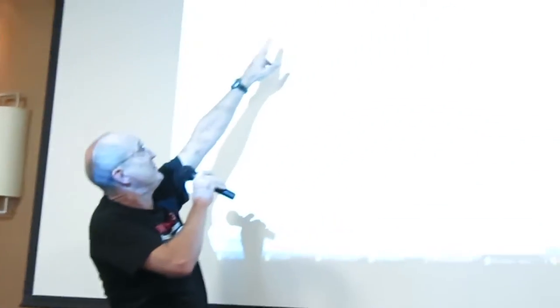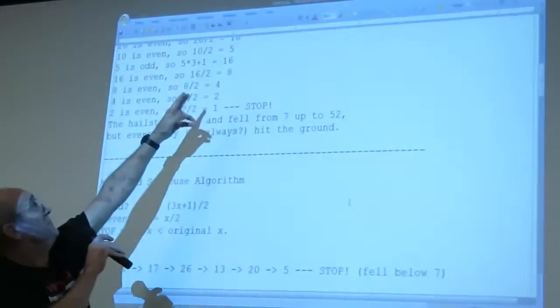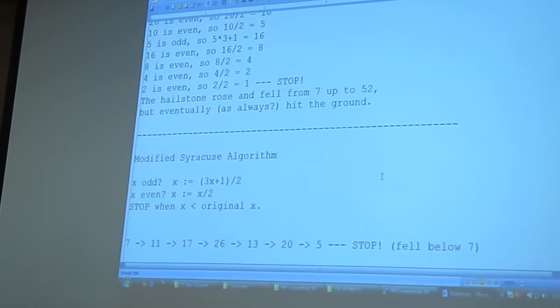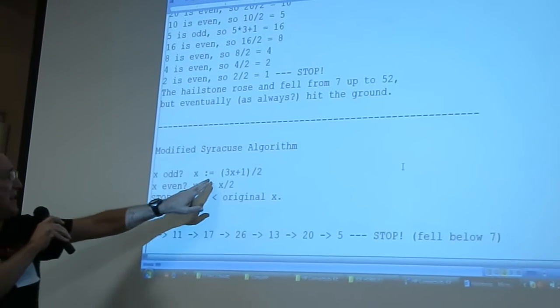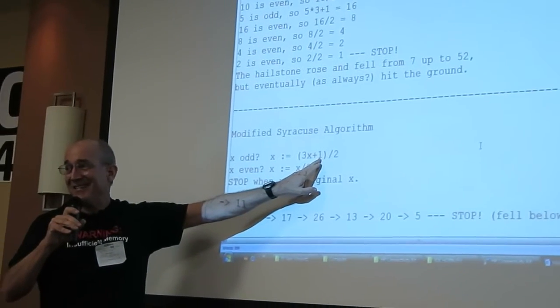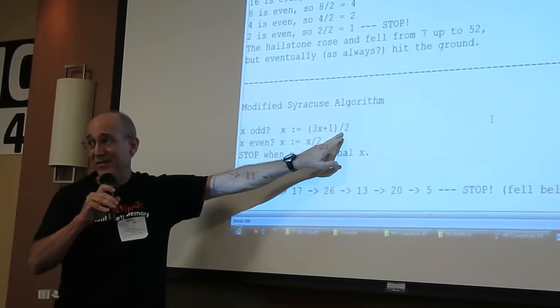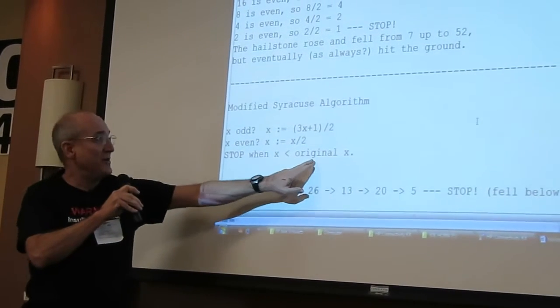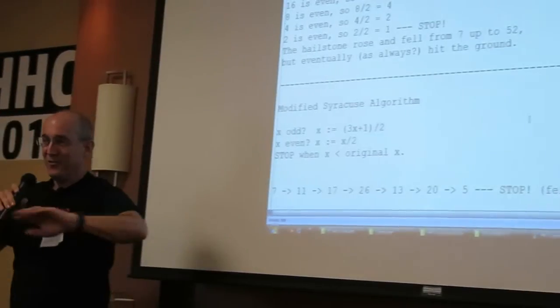But I realized that instead of checking numbers all the way down to 1, that's kind of silly because like, for instance, we started with 7. At this point, we got to 5. Well, I had already checked 5, right? Like a week before at the speed of an HP67. So I had already checked 5, so might as well stop at that point. We don't have to do all this. So I changed the whole thing. I said, okay, look, since every odd number when you multiply by 3 and add 1 is always even, might as well not check to see whether it's even or odd at that point. Just divide by 2, always. And as soon as you get below what you started with, stop. Don't go all the way down to 1.